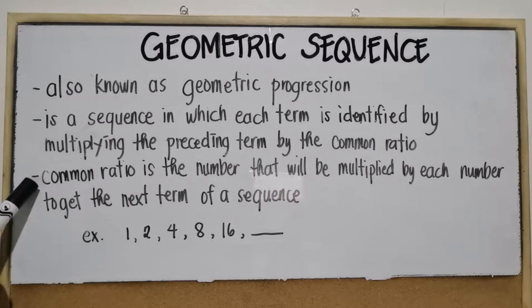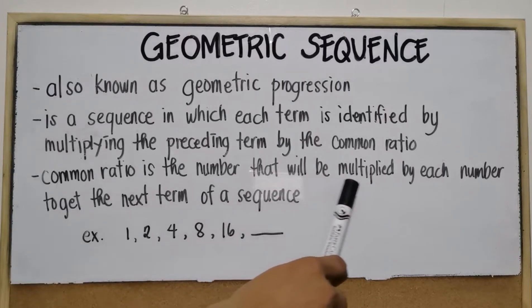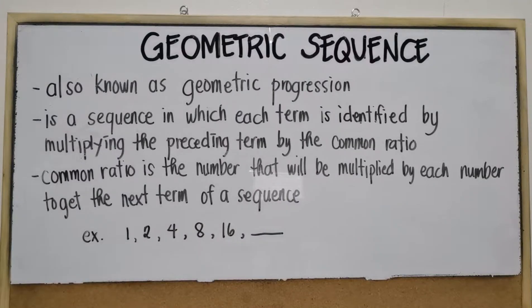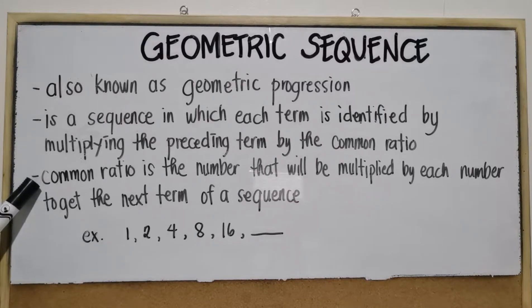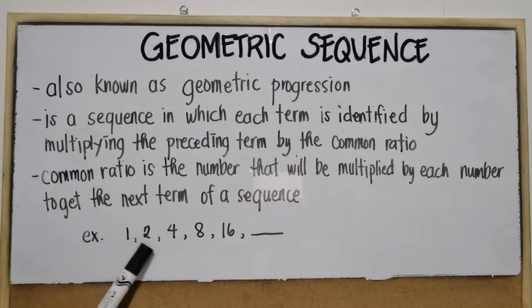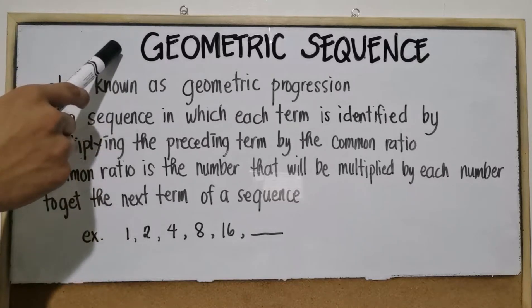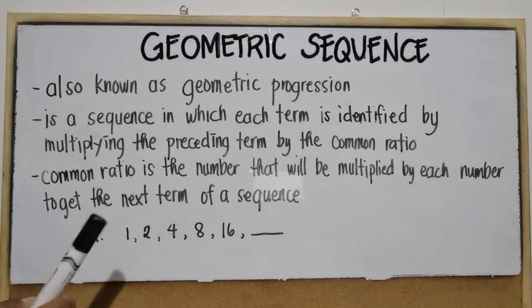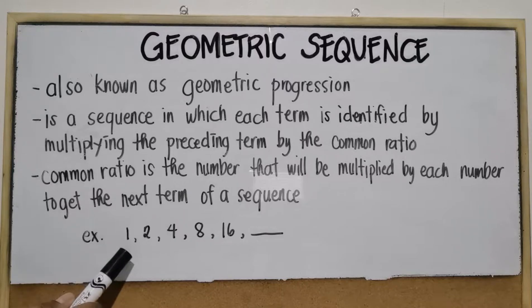Now let's find out what a common ratio is. The common ratio is the number that will be multiplied by each term to get the next term of a sequence. This sequence is an example of geometric sequence because it has a common ratio. The common ratio of this geometric sequence is 2.